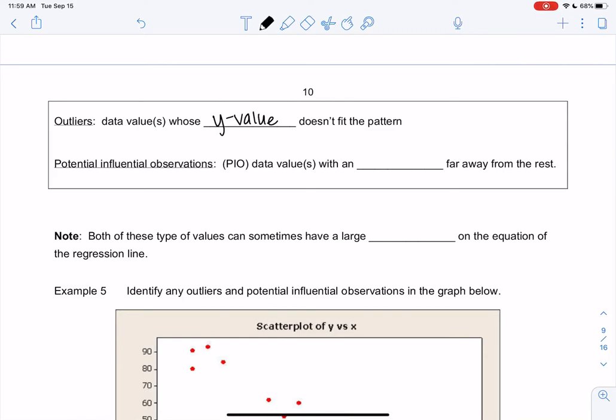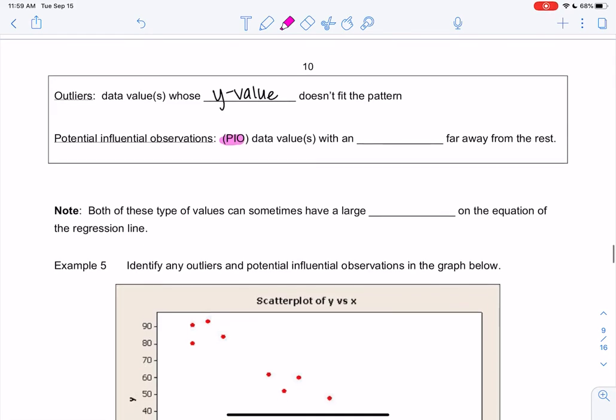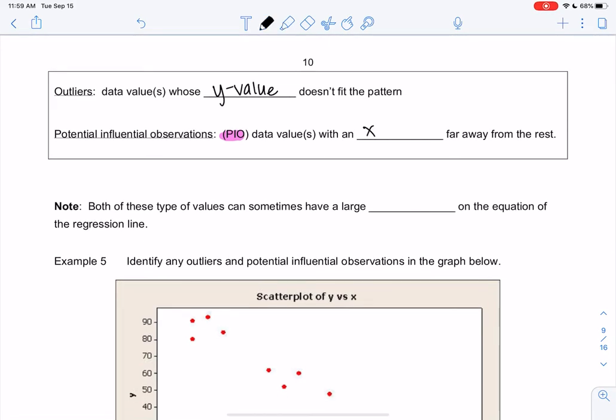And then potential influential observations, that's a handful, so we call them PIOs for short, as a data value with an X value far away. So both of these are kind of far away, but in different ways.